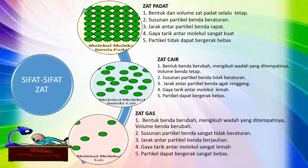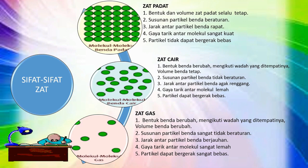Berikut ini adalah sifat-sifat zat. Yang pertama, zat padat. Zat padat memiliki bentuk dan volume yang selalu tetap. Susunan partikelnya beraturan. Jarak antar partikel yang rapat, gaya tarik antar molekul sangat kuat, sehingga partikel tidak dapat bergerak bebas.